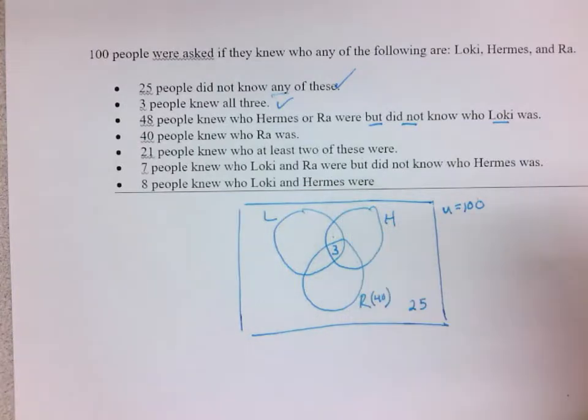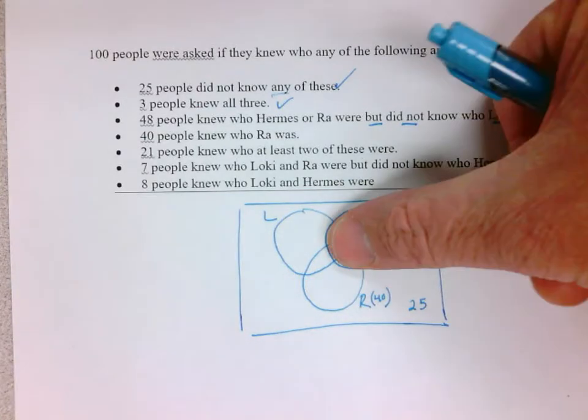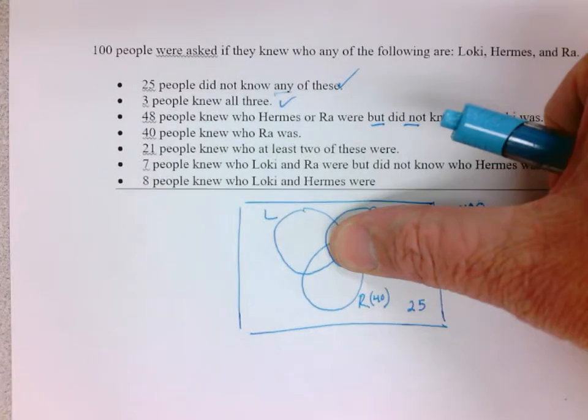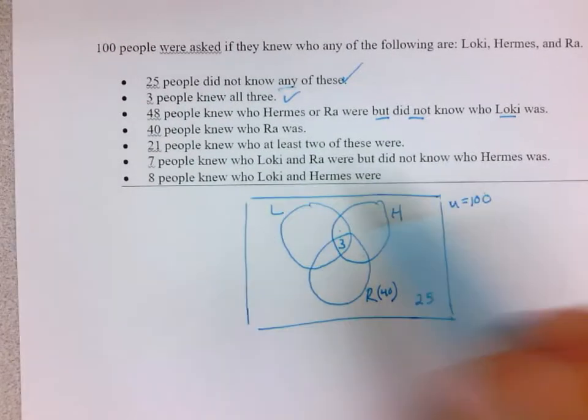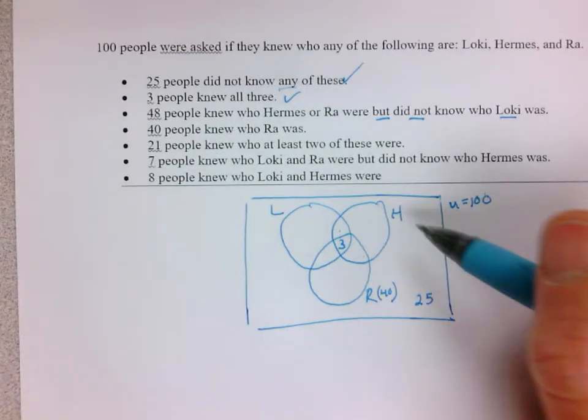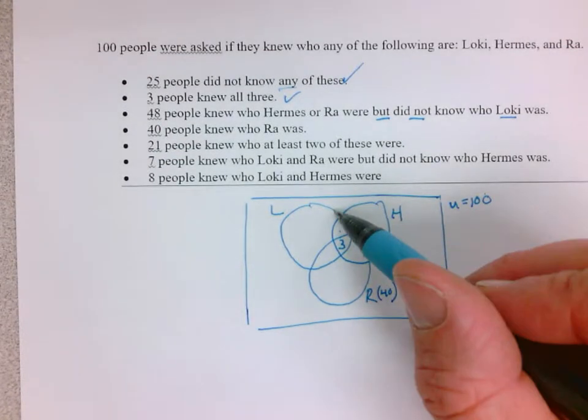Seven people knew who Loki and Ra were but did not know who Hermes was. So Loki and Ra but not Hermes, that is seven. Again, I don't have enough numbers. Eight people knew who Loki and Hermes were.